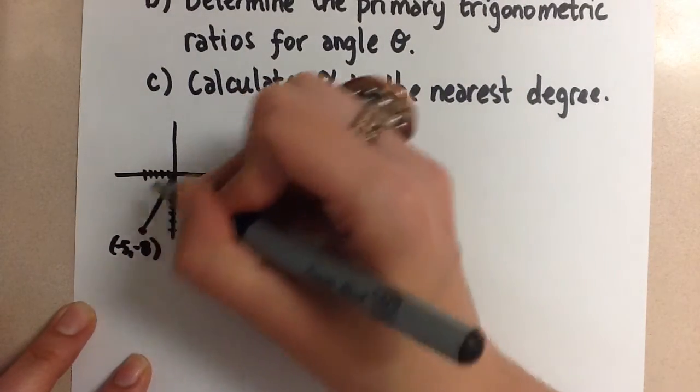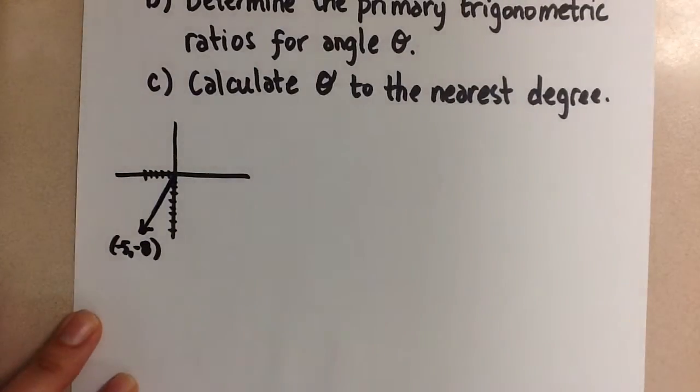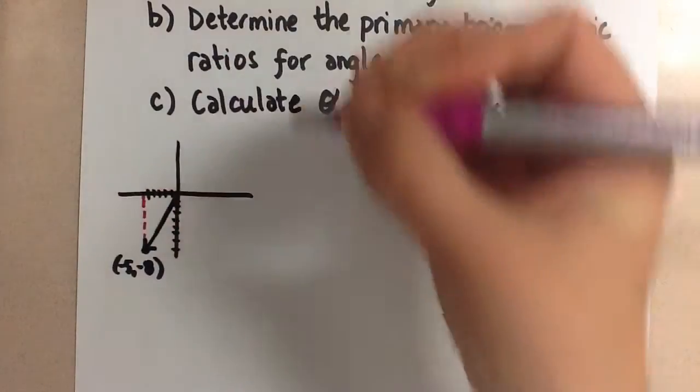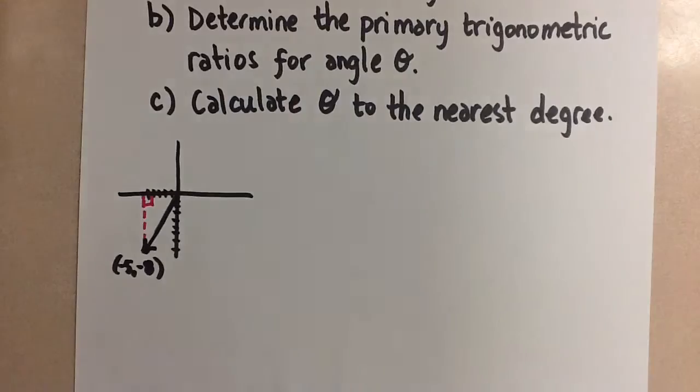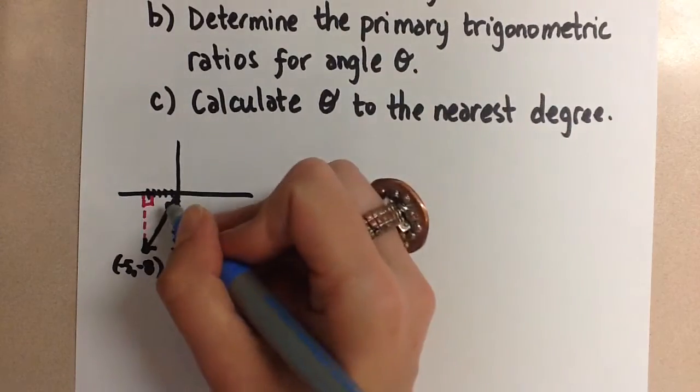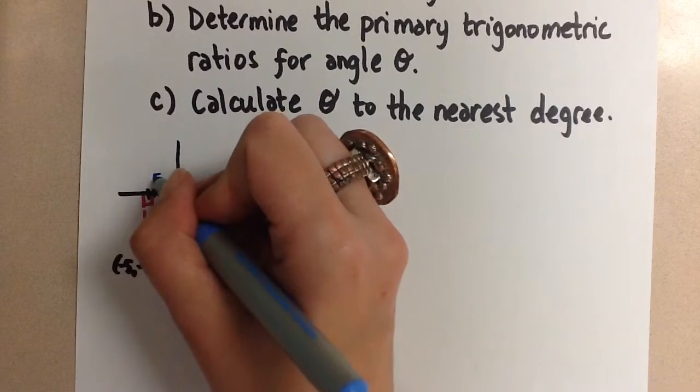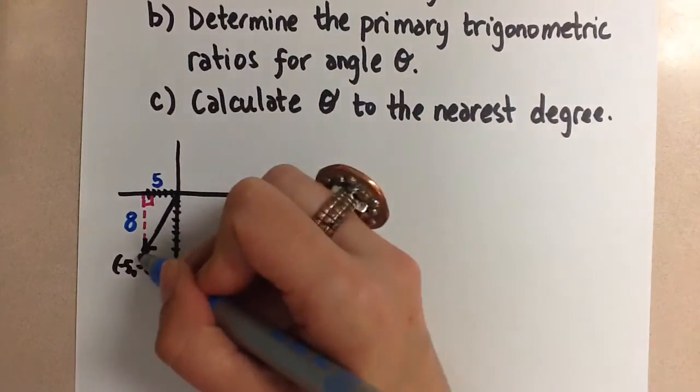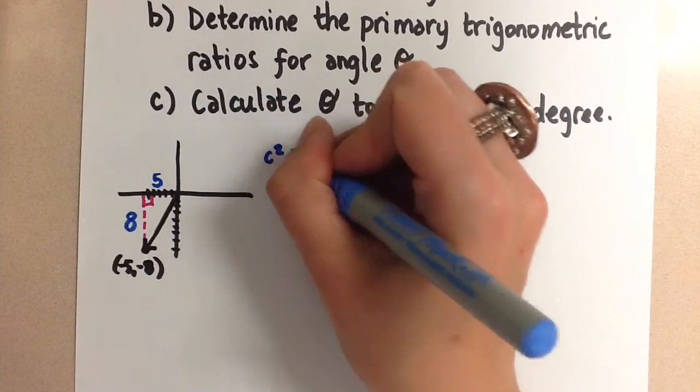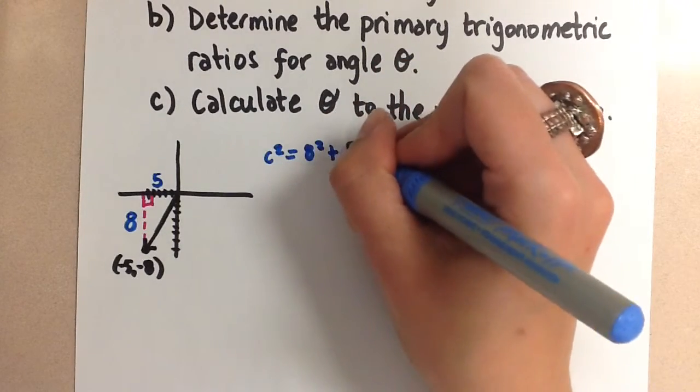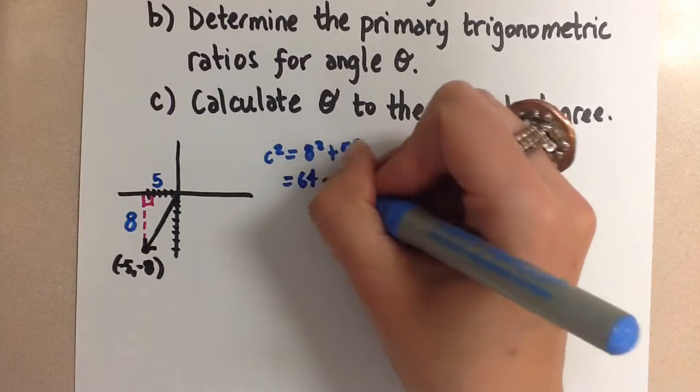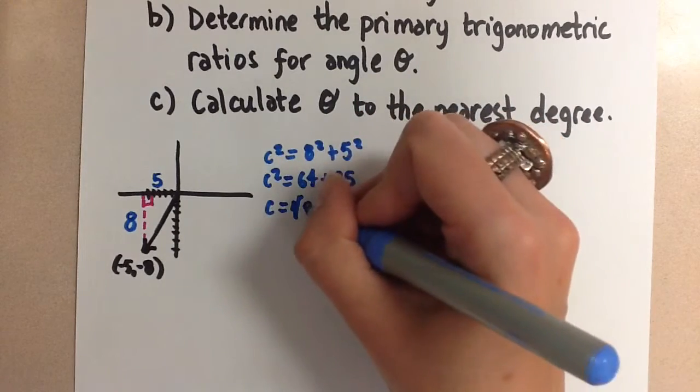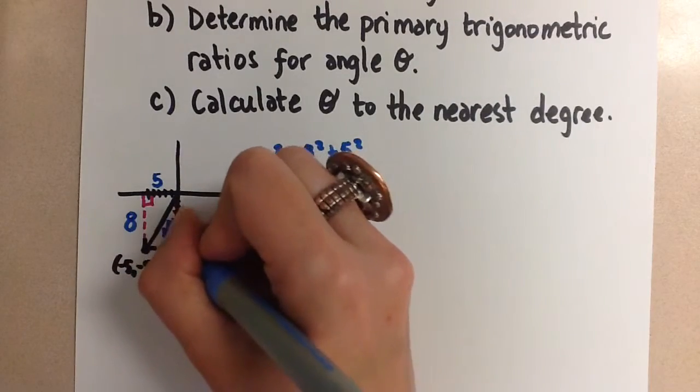Our terminal arm lies on that point there. So this means that we can create a right-angle triangle like this. And we can label this using the 5 as one leg of the right-angle triangle and the 8 as the other leg of the right-angle triangle, and we're left with that hypotenuse that we can solve for by doing the Pythagorean theorem. So C squared equals 8 squared plus 5 squared. C squared equals 64 plus 25. And so C is equal to the square root of 89. And we can just leave it as that so that we can get some exact values here.